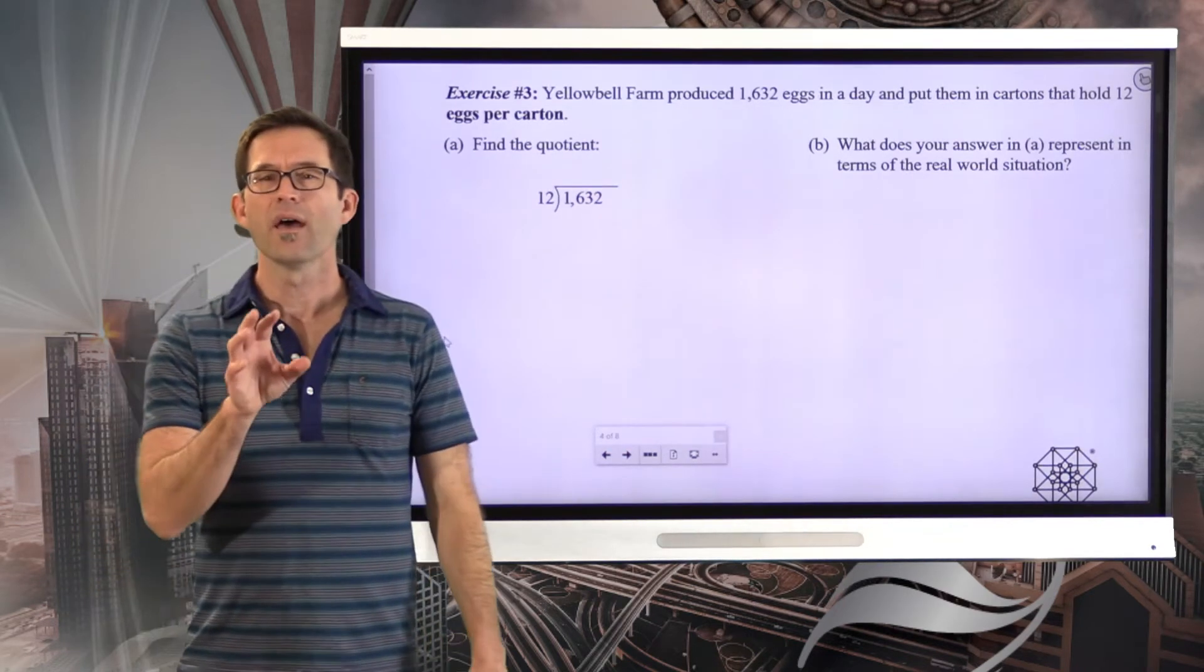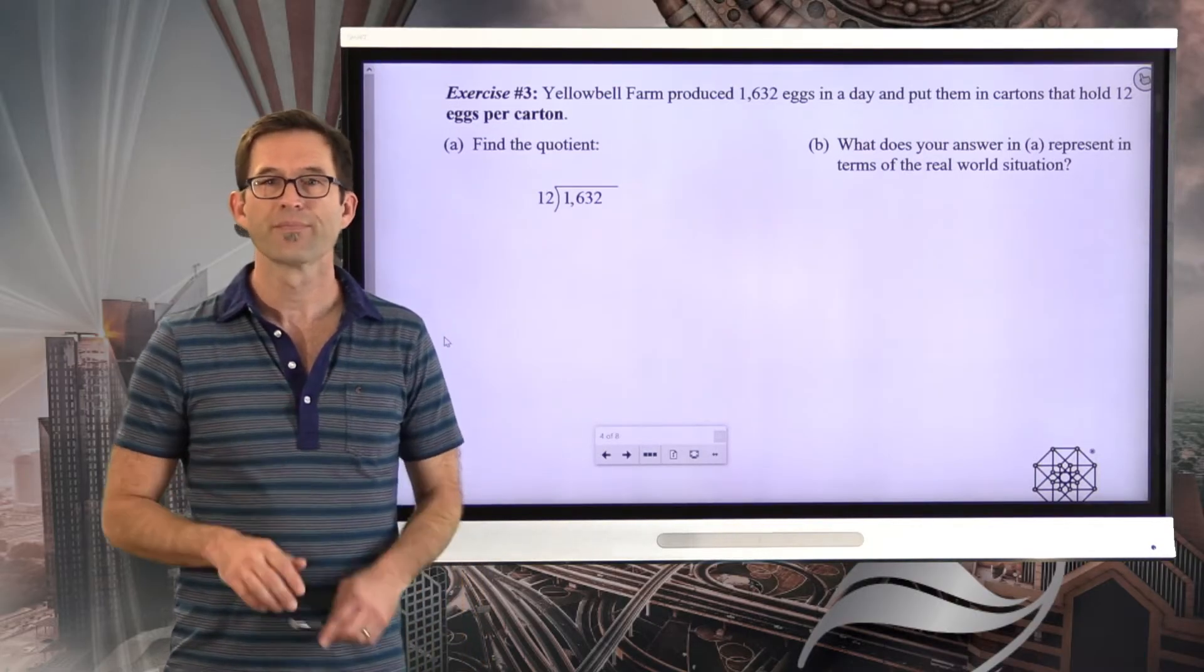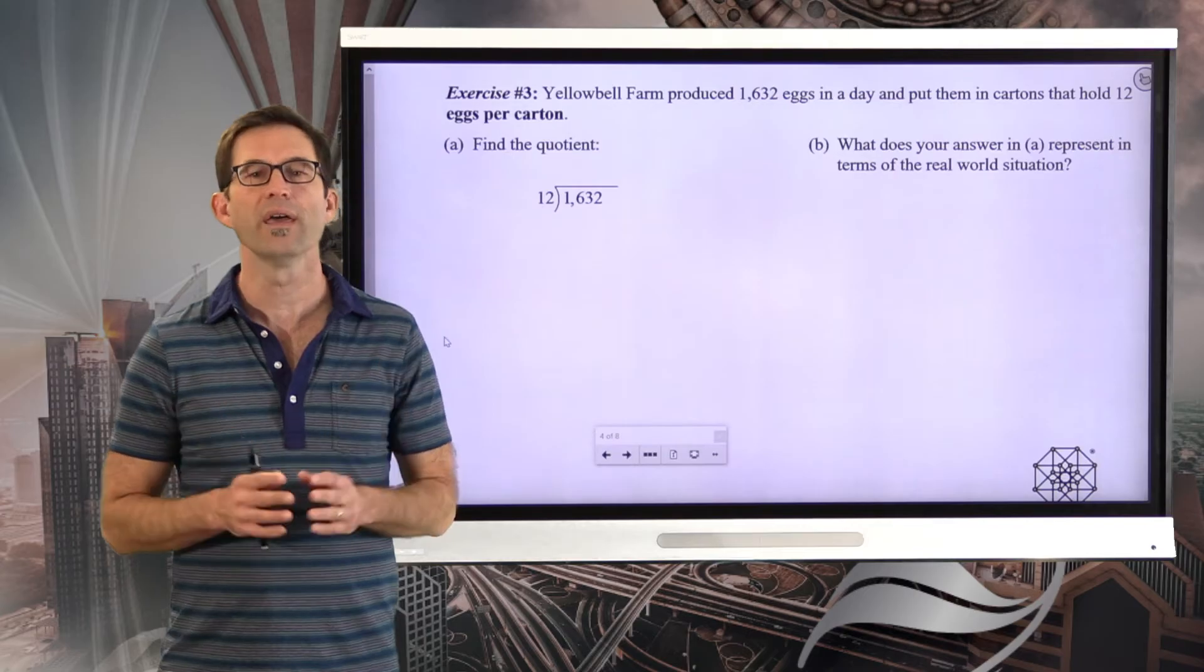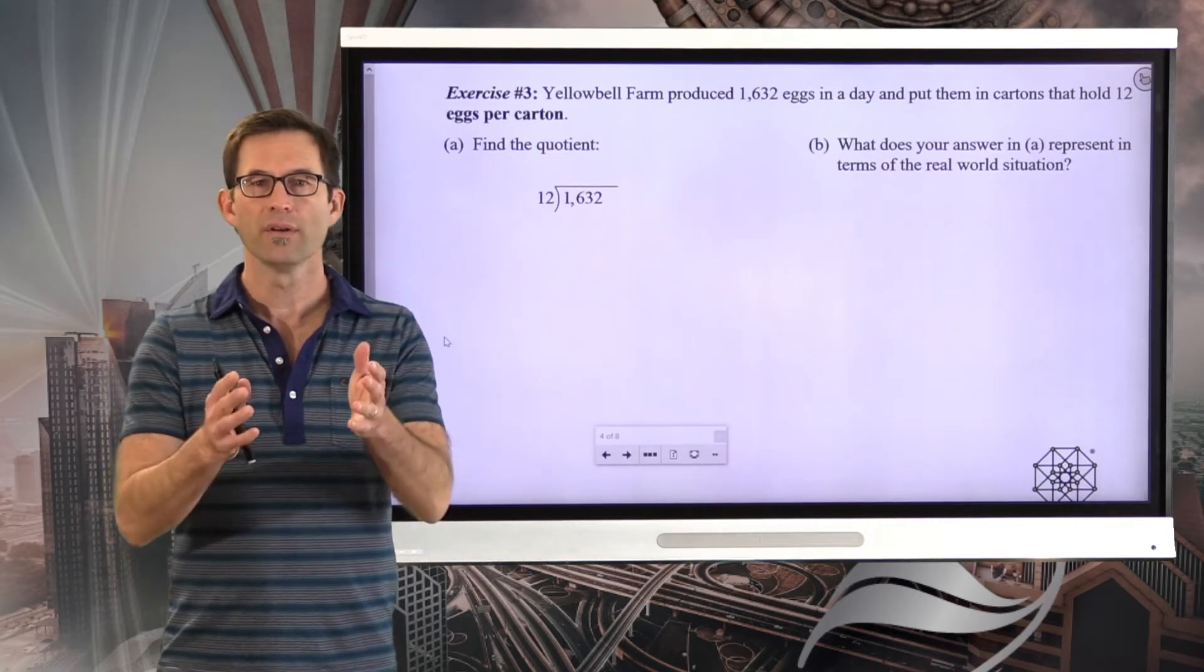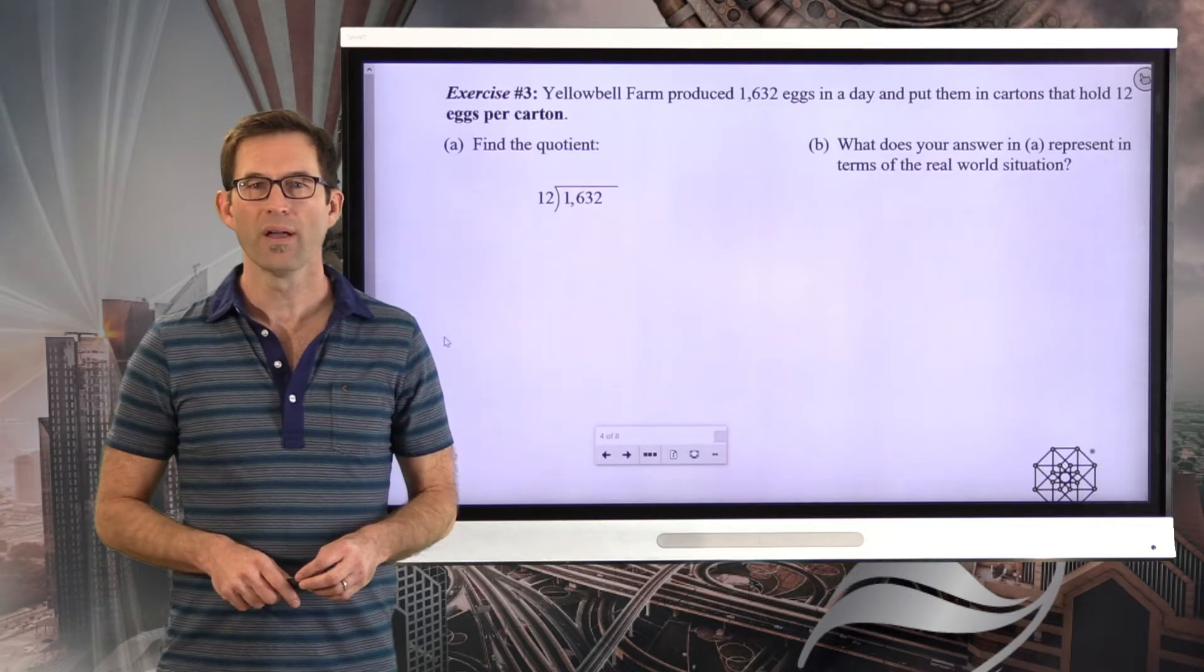All right. Let's take a look at another interpretation of division in exercise number three. Yellowbell Farm produced 1,632 eggs in a day and put them in cartons that hold 12 eggs per carton. First thing we're asked in letter A, find the quotient 1,632 divided by 12. Why don't you take a minute or two and find that quotient?